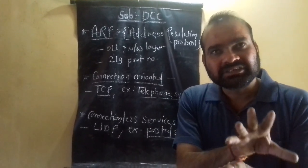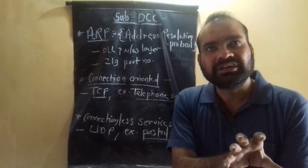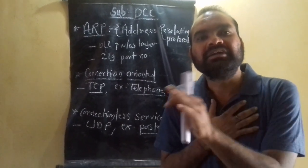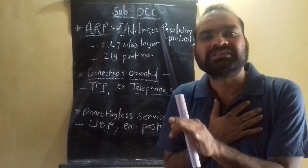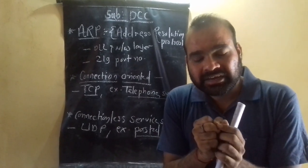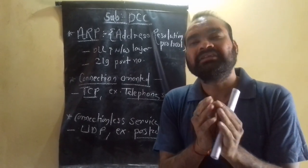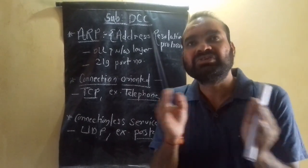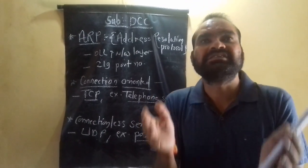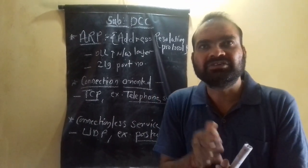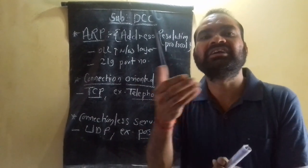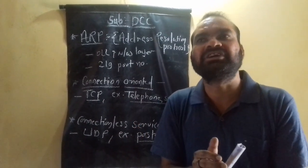At that time, the sender gets a surety that its packet and information has been received by the receiver properly and successfully. That kind of process is a connection-oriented system. In a connection-oriented system, there is connection establishment, release of the connection, and termination of the connection.